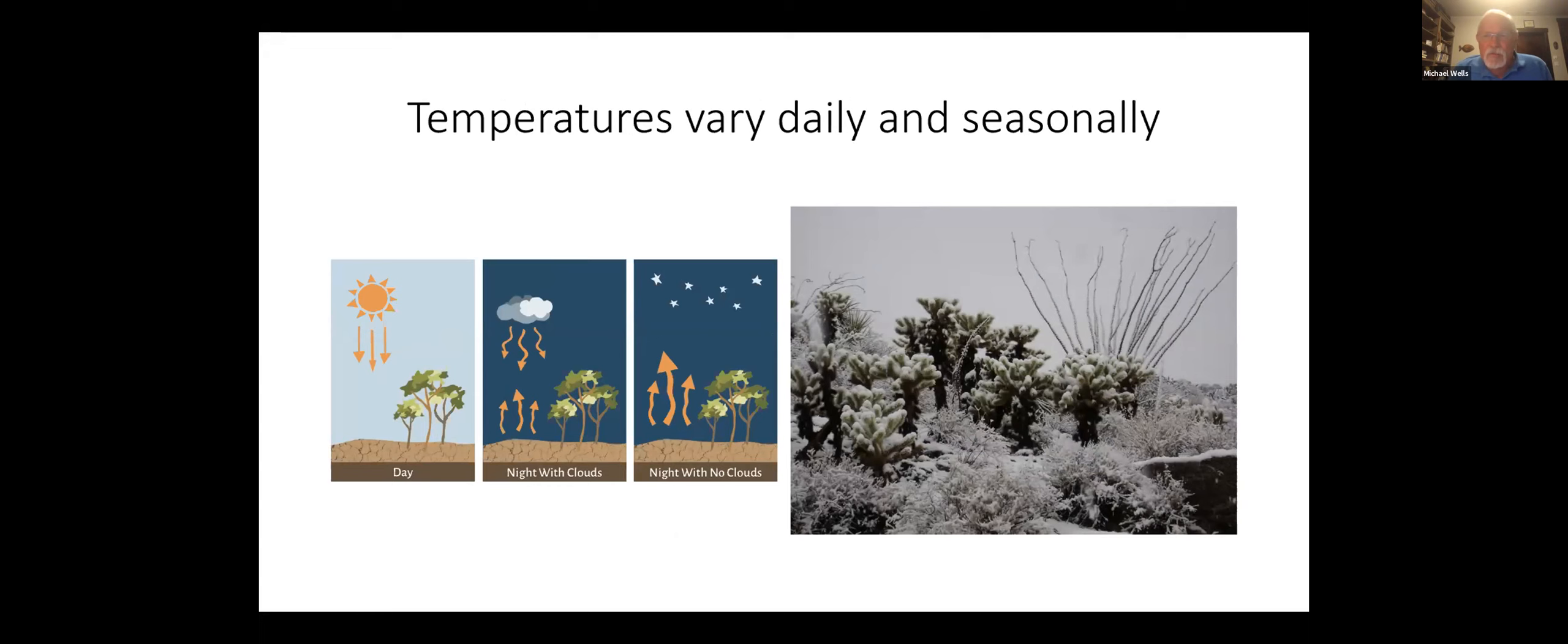Temperatures vary both daily and seasonally because there's very little cloud cover in the desert. We get a lot of insolation, sunshine during the day, and then at night we do not have a sort of insulating cover of clouds, so a lot of that heat is reflected back into the atmosphere, and temperatures can drop quite precipitously. Over the course of the year, it is not terribly unusual for us to get snowfall during the winter.